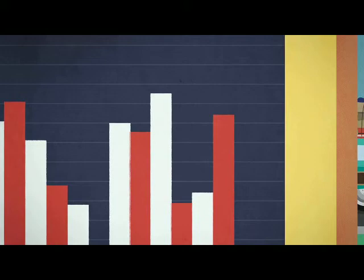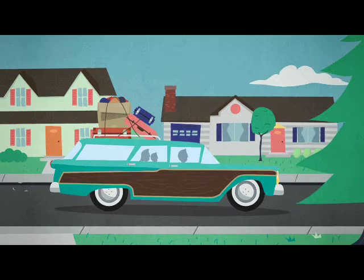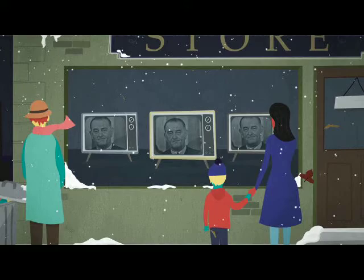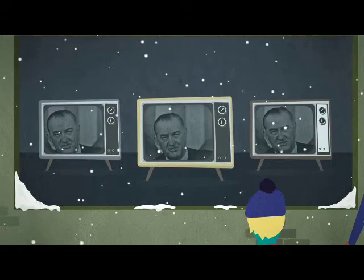The answer takes us back 50 years. A boom economy after World War II brought tremendous prosperity to the country, but millions were left out. When President Johnson launched the War on Poverty in 1964, the Census Bureau needed an accurate way to determine who was in poverty and whether we were winning the battle to end it. But there was no official method.